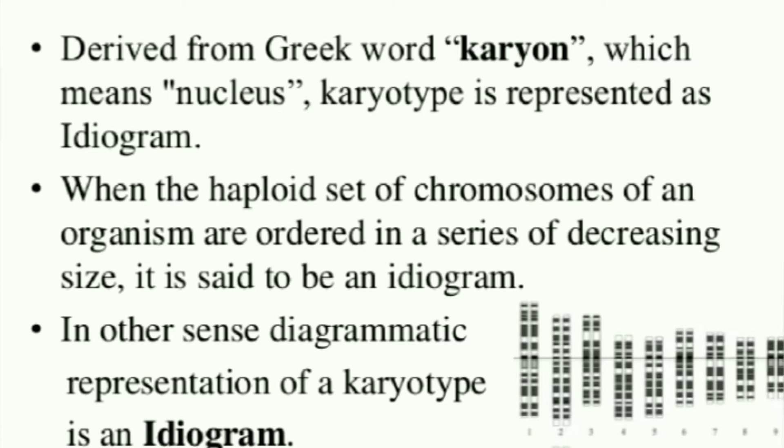The karyotype is represented as an ideogram. An ideogram is the haploid set of chromosomes arranged in decreasing size order. As seen in the diagram, chromosomes are arranged from 1 to 22, as well as the X and Y chromosomes, in decreasing size order. This collection of chromosomes is the karyotype, and the process of forming it is known as karyotyping.